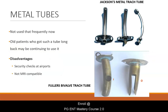Metal tubes are not frequently used now. Older patients who have been using such a tube for a long time may continue with it for comfort. The disadvantages include having to undergo special security checks at airports when traveling, and they are not MRI compatible. There are two types of metal tubes: Jackson's metal tracheostomy tube and Fuller's bivalve tracheostomy tube.